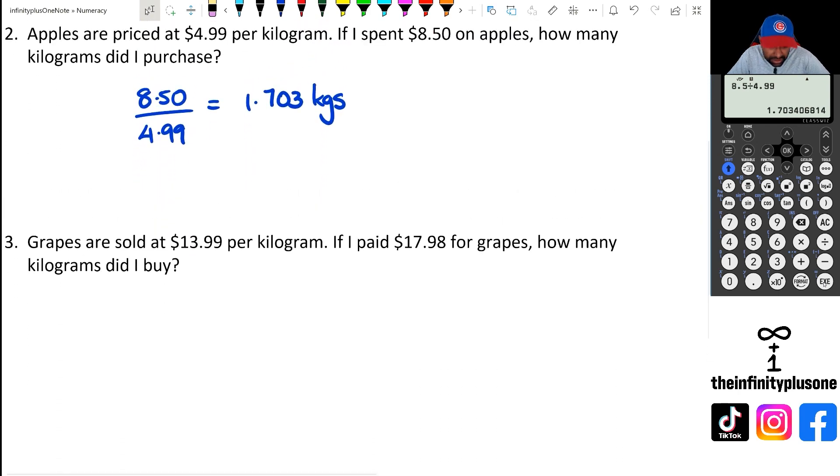And finally, looking at question 3 here, we've got $13.99 per kilogram and paid $17.98 for grapes. How many kilograms to buy? So that is $17.98 divided by $13.99. And once again, we're going to use the calculator. So we've got $17.98 and that's divided by $13.99, which is going to give me 1.285 kilograms.